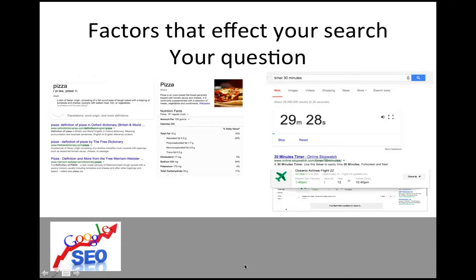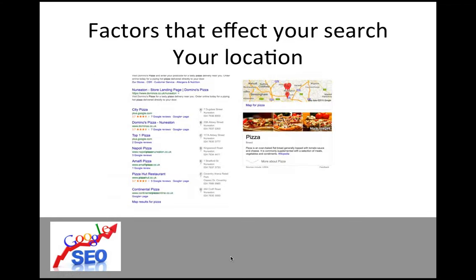You might type in '30 second timer' and it automatically comes up with a timer. You can type in an airline flight number and it can tell you where in the world that flight is — it works out the answer based on the question you're typing in. The other factor, as you just saw from my searching, was location. It's really heavily based on location, and we want to think about optimising to get found based on location.